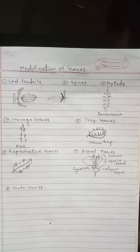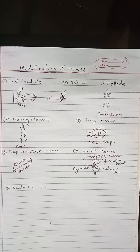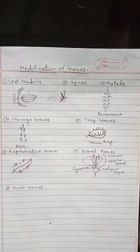Trapped leaves are also called insectivorous leaves or carnivorous leaves. Plants having trapped leaves usually grow in nitrogen-deficient soils and have poorly developed root systems. These plants get their nitrogenous requirements by capturing insects — to attract, capture, kill and digest the insects, the leaves are modified into trapped leaves.